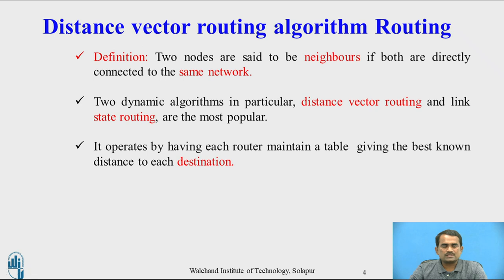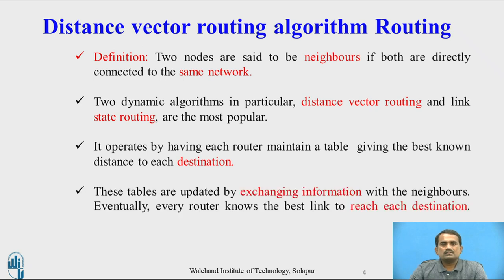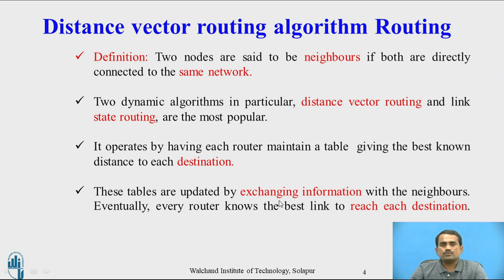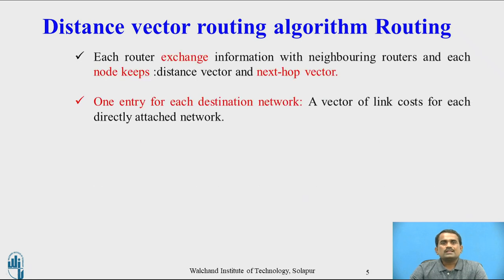While transmitting data from one node to another, the router maintains a routing table giving the best result. These tables are updated by exchanging information with neighbors. Eventually, every router knows the best link to reach each destination. While transmitting any data or packet, all the information is stored in the table. Each router exchanges information with neighboring routers, and each node keeps the distance vector and next hop vector.